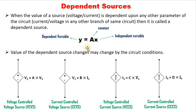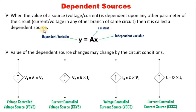Coming to the next type: dependent sources. When the value of a source is dependent on any other parameter of the circuit — and that parameter can be a current or a voltage in any other branch of the same circuit — then it is called a dependent source.